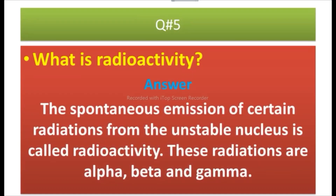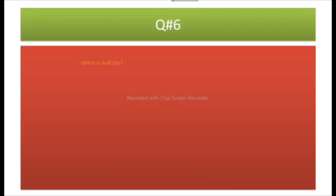Question number five: What is radioactivity? Answer: The spontaneous emission of certain radiations from the unstable nucleus is called radioactivity. These radiations are alpha, beta, and gamma.